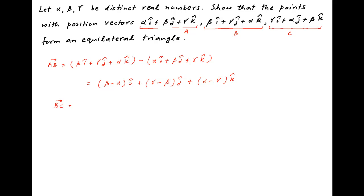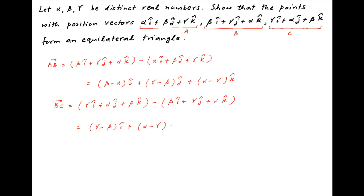Similarly, vector bc is equal to the position vector of point c minus position vector of point b, which is equal to gamma i plus alpha j plus beta k minus beta i plus gamma j plus alpha k. This is equal to gamma minus beta times i plus alpha minus gamma times j plus beta minus alpha times k.